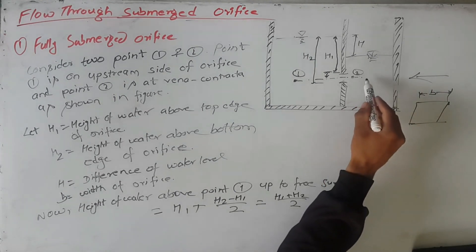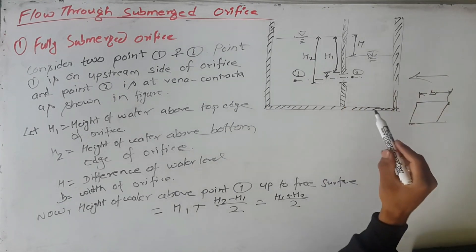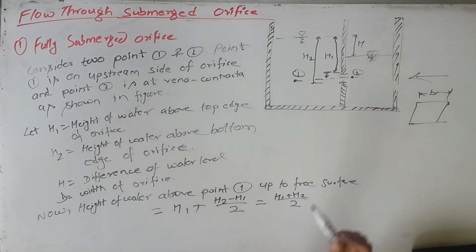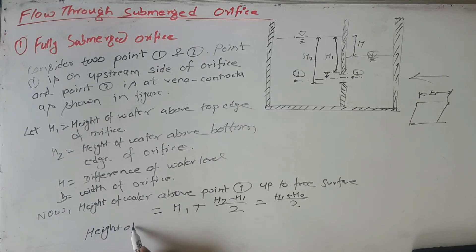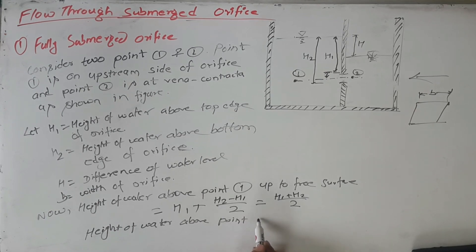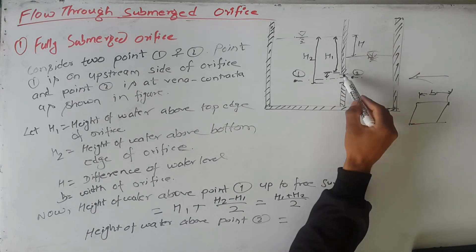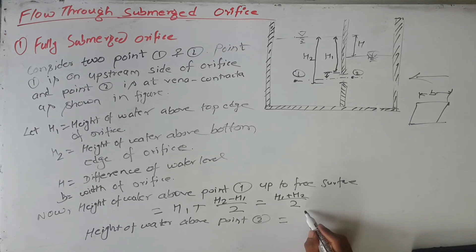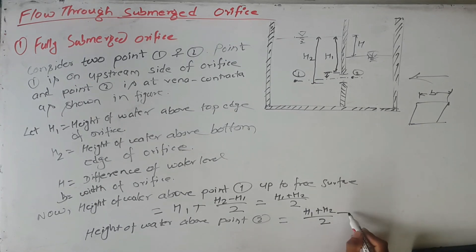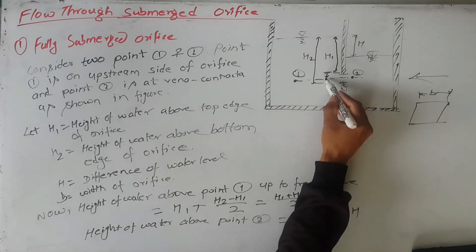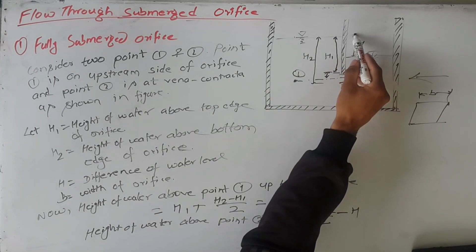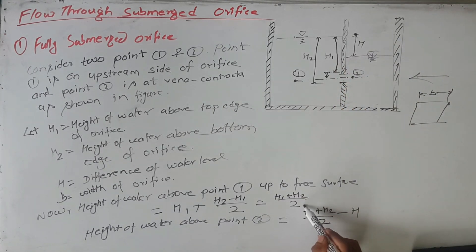Similarly, we can calculate the height of the water surface from point 2. From the center, the height to the upstream free surface is h1 plus h2 by 2. If we subtract h, we get h1 plus h2 upon 2 minus h as the height from point 2 to the downstream free surface.